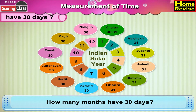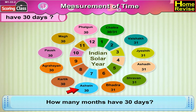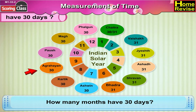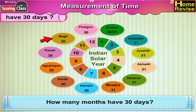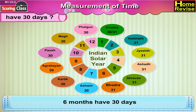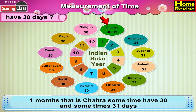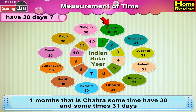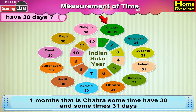How many months have 30 days? Counting: 1, 2, 3, 4, 5, 6. Six months have 30 days, and one month — Chetra — sometimes has 30 and sometimes 31 days.